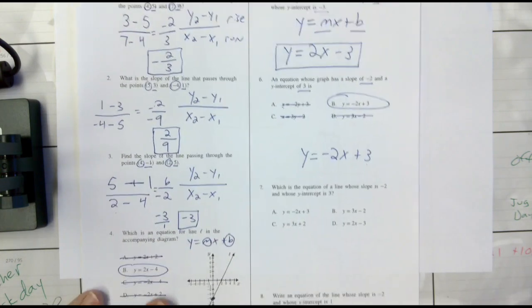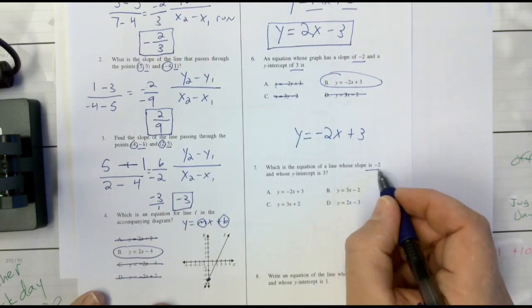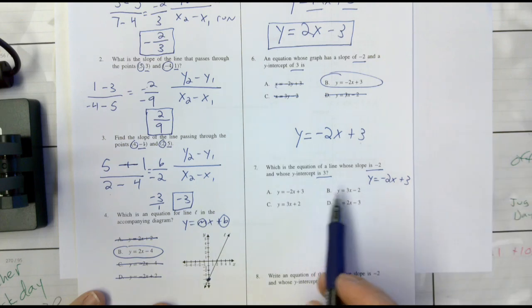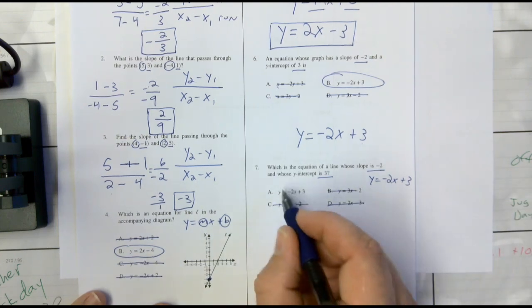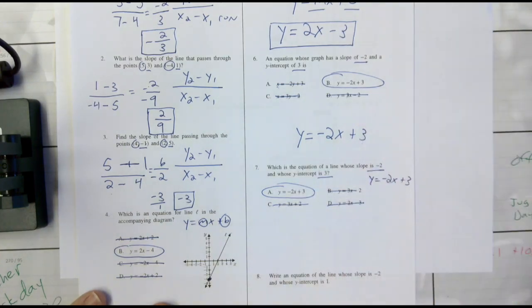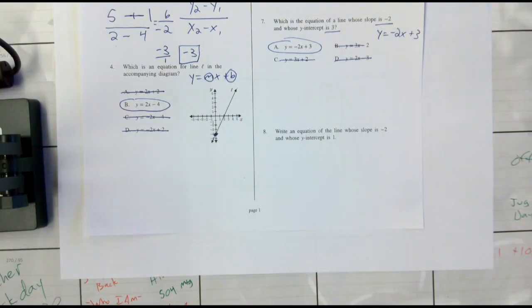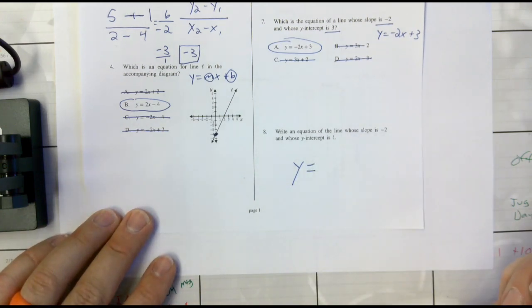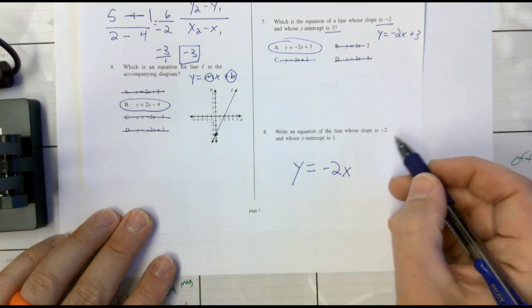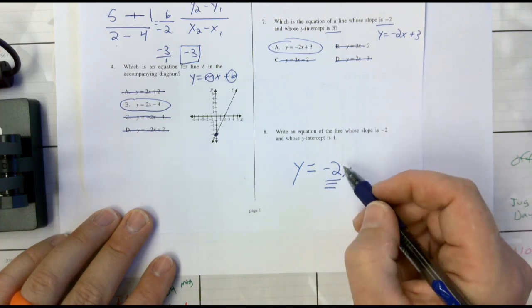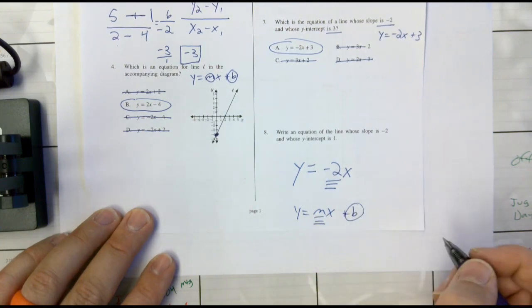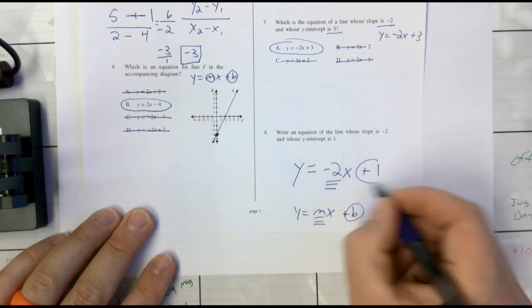Write an equation of a line whose slope is negative two and y-intercept is positive one. Same approach. y equals... negative two x because that's my slope. The general form, remember, is y equals mx plus b — m is slope, b is y-intercept. Positive one for my y-intercept. So it's y equals negative two x plus one.